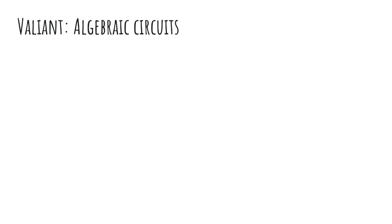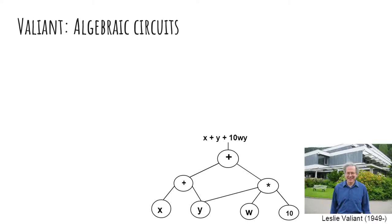I move to the definition of Valiant, which is the definition of algebraic circuit computation. In the leaves you see variables or constants, and the computation proceeds from the leaves upward. At every layer, either addition or multiplication happens. From variables you get to a polynomial, then from polynomials you get to bigger polynomials, and ultimately at the root you get, for example, the polynomial X plus Y plus 10 times Y — a quadratic polynomial.